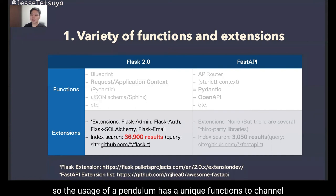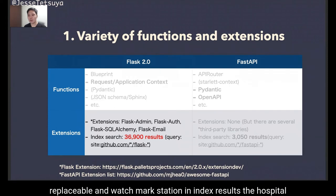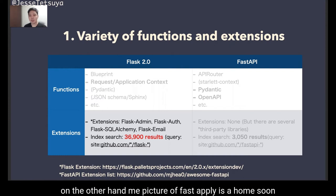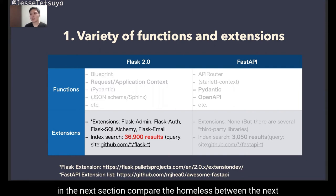Flask has unique functions that are not replaceable and far more extension and index results than FastAPI. In terms of variety of functions, Flask wins out over FastAPI. On the other hand, the main feature of FastAPI is performance, so in the next section we compare the performance between them.